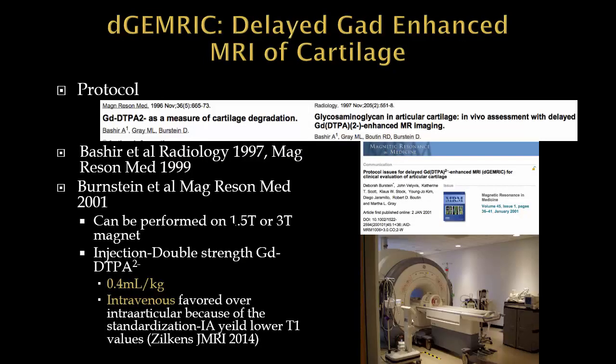There are many different protocols for dGEMRIC that vary based on the machine and available time. Bashir et al. wrote multiple articles on potential protocols; Bernstein et al. in Magnetic Resonance in Medicine in 2001 confirmed it can be performed at both 1.5T and 3T. It requires a double injection of gadolinium, about 0.4 mL per kilogram. Intravenous administration is favored over intraarticular — it's safer, with no infection risk, and provides better standardization of T1 values, as proven by Zilkins in the Journal of MRI in 2014.